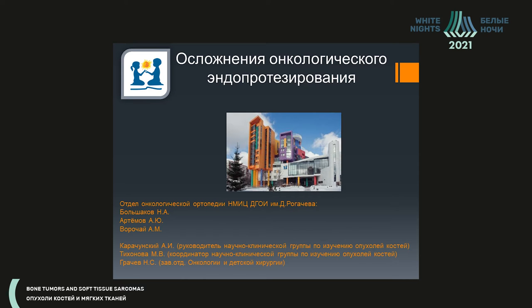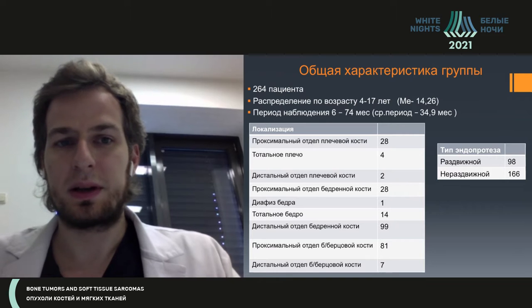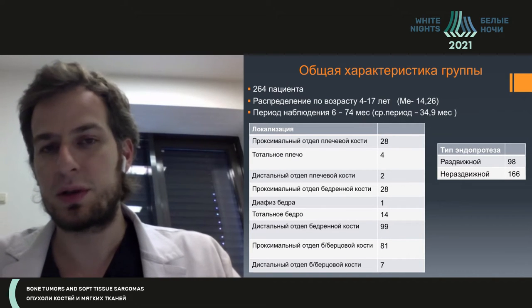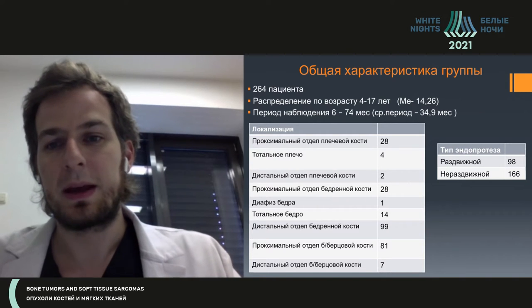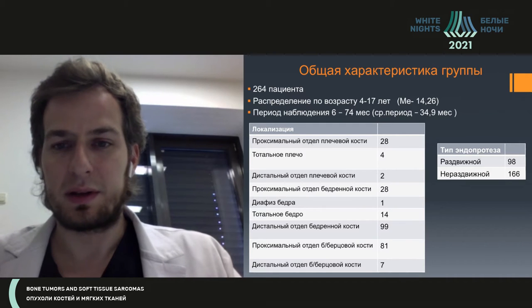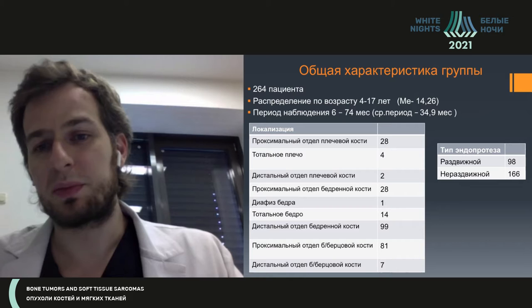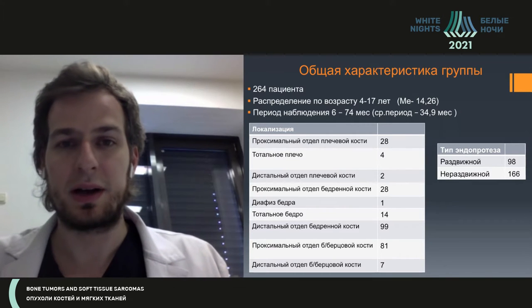Good afternoon, dear colleagues. I would like to talk about the complications of total replacement in patients of younger groups. The mean period of follow-up was from six months and longer, up to 74 months. 264 patients in the age group between 4 to 70 years. Mainly, these are patients after total knee replacement. We distributed them by different types of implants.